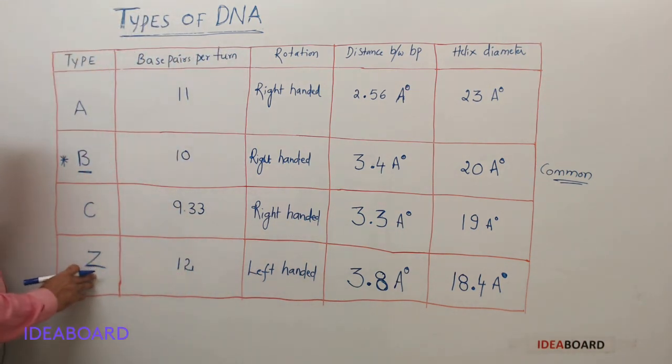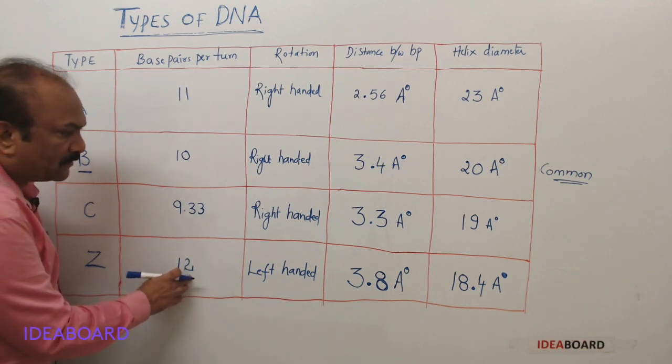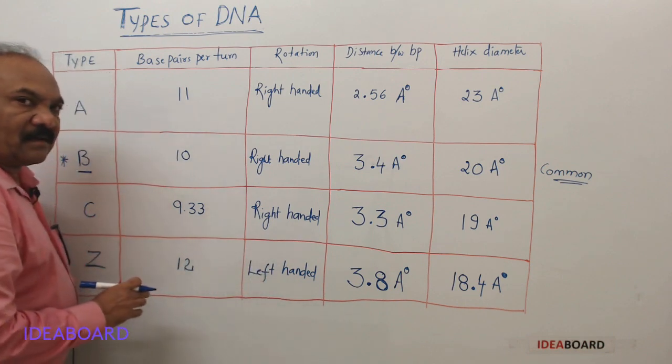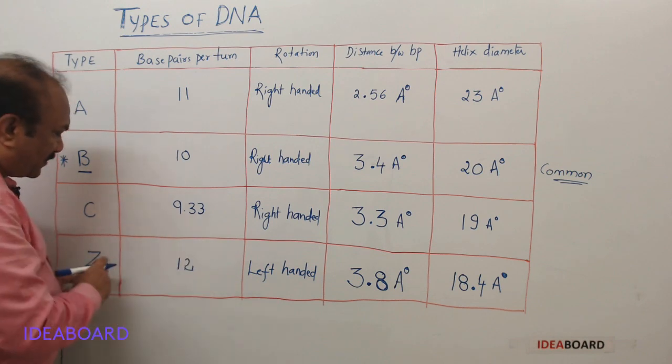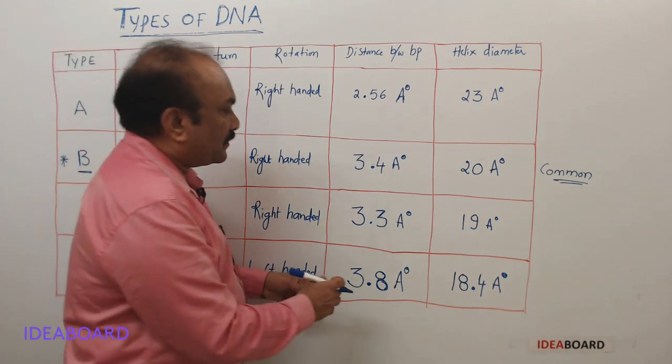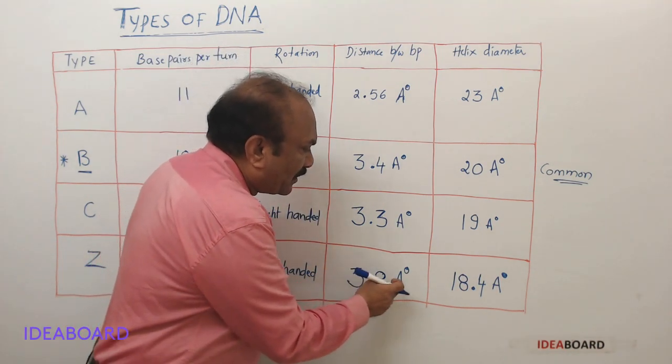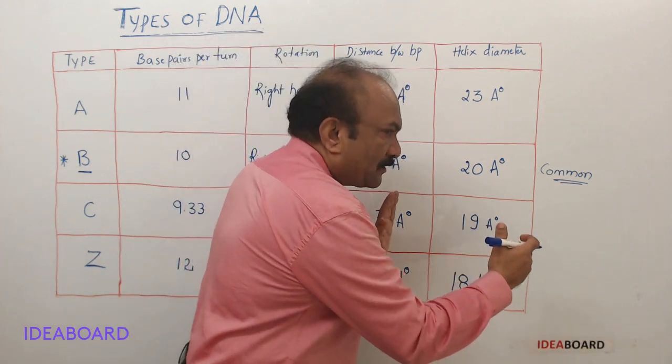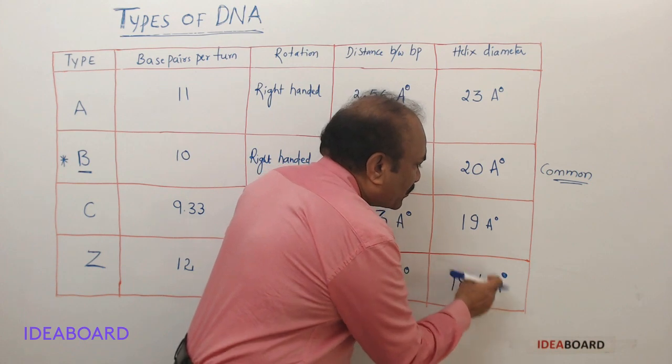When we come to Z-DNA, it is showing 12 base pairs per turn, and it is left-handed helix. It will show zigzag arrangement—that's why it is called Z-DNA. The distance between the two base pairs here is 3.8 angstroms, and the diameter or width of DNA is 18.4 angstroms.